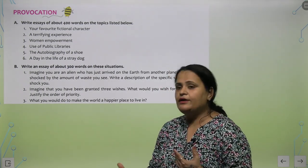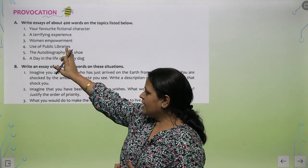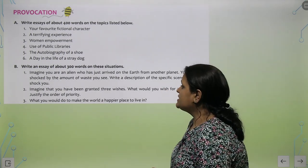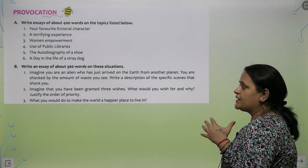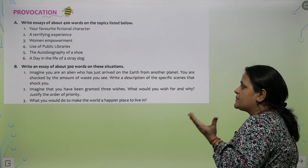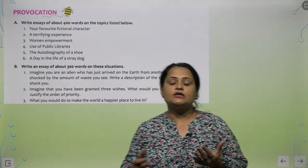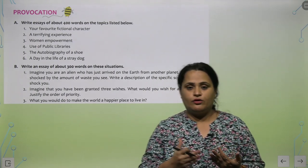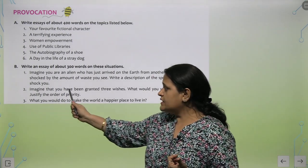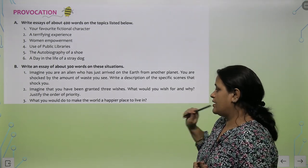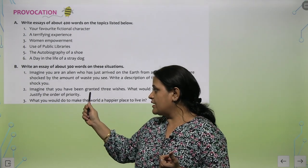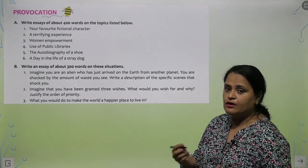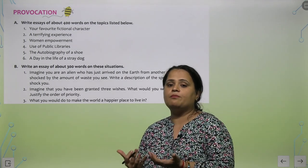You will pick any two topics from exercise B. First: 'Imagine you are an alien who has just arrived on Earth from another planet — you are shocked by the amount of waste you see. Write a description of the specific scene that shocked you.' In descriptive essays, aapko apne aap ko rakhna hoga in someone else's position. Second: 'Imagine you have been granted three wishes — what would you wish for and why?' Third: 'What would you do to make the world a happier place to live in?'